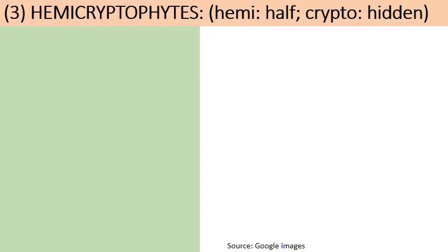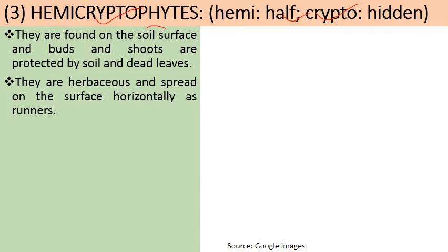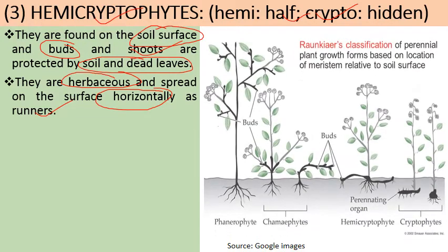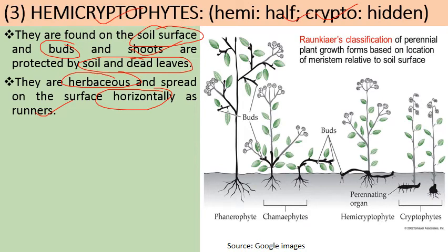The third life form is Hemicryptophytes. 'Hemi' means half, 'crypto' means hidden. They are found at the soil surface, where the buds and shoot tips are protected by soil or dead leaves. These are herbaceous plants that spread on the surface horizontally as runners — as in the case of doob grass, Cynodon dactylon — where the perennating structures run horizontally along the soil surface.